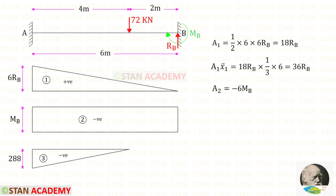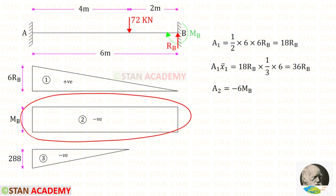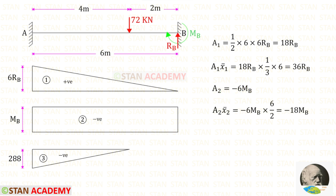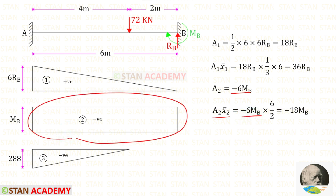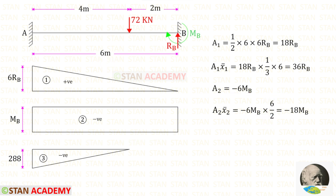Now let us find area 2 and x2̄. We know that it is a rectangle. When we multiply MB by 6, we get the area, and we know that it is negative. For this rectangle, the centroid lies at the centre, so to find the centroid distance we divide the length by 2. For area 2, x2̄, we get minus 18MB.